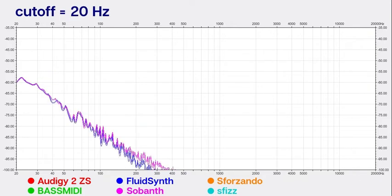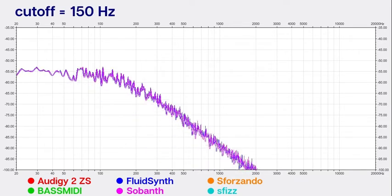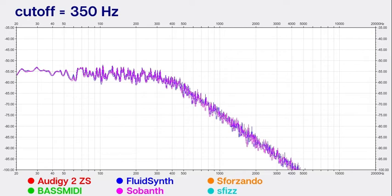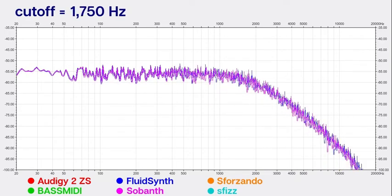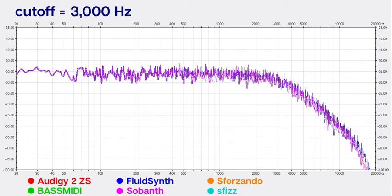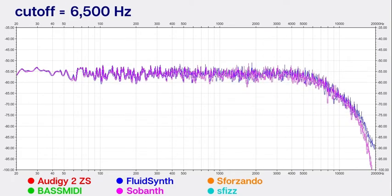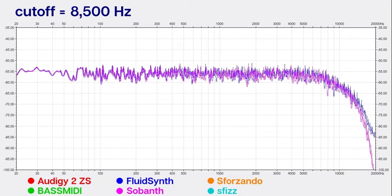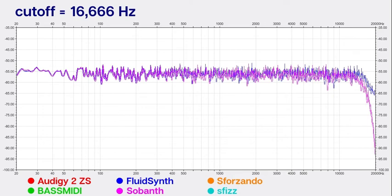Here we go. So pretty lockstep between both synths until we get to the very top. And what you're going to see at the very top is that SoBanth has a hard roll-off, so you just cannot get those top frequencies like you can with FluidSynth.